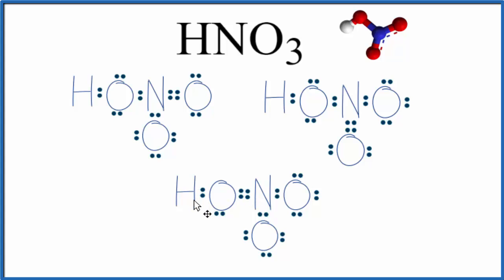We can tell which resonance structures are the most likely or favorable by looking at the formal charges. So if I calculate the formal charges on each one of these structures, here's what I get.